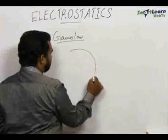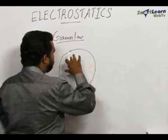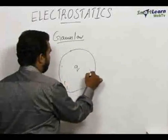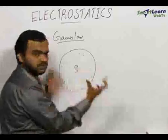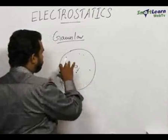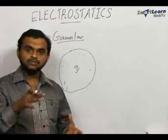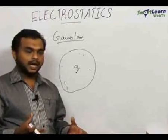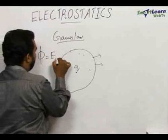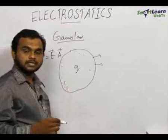It can be any closed surface. If you take any closed surface and have a charge Q here, the flux passes through this closed surface. This represents a 3D surface — for example, a football-like surface, a closed spherical surface, or a closed cylinder. The flux through this closed surface is E dot A.